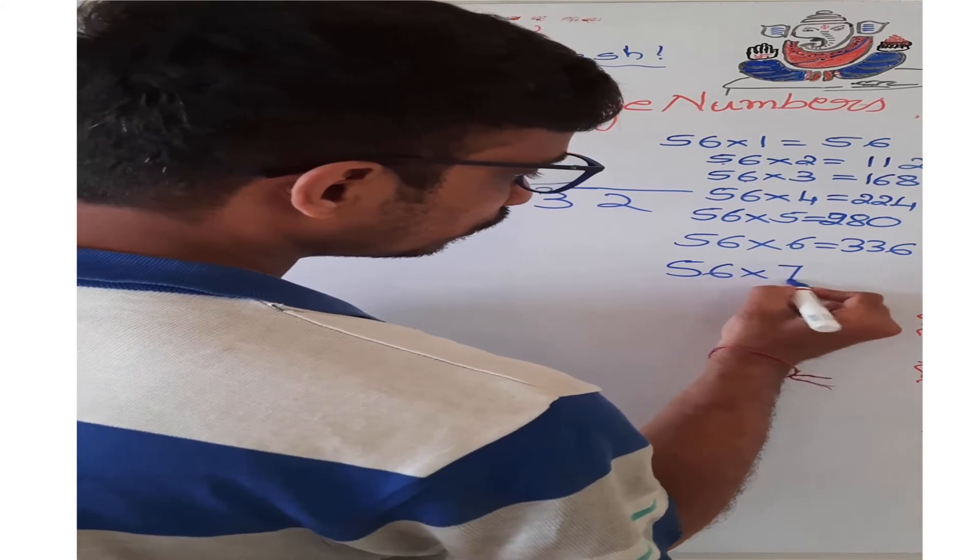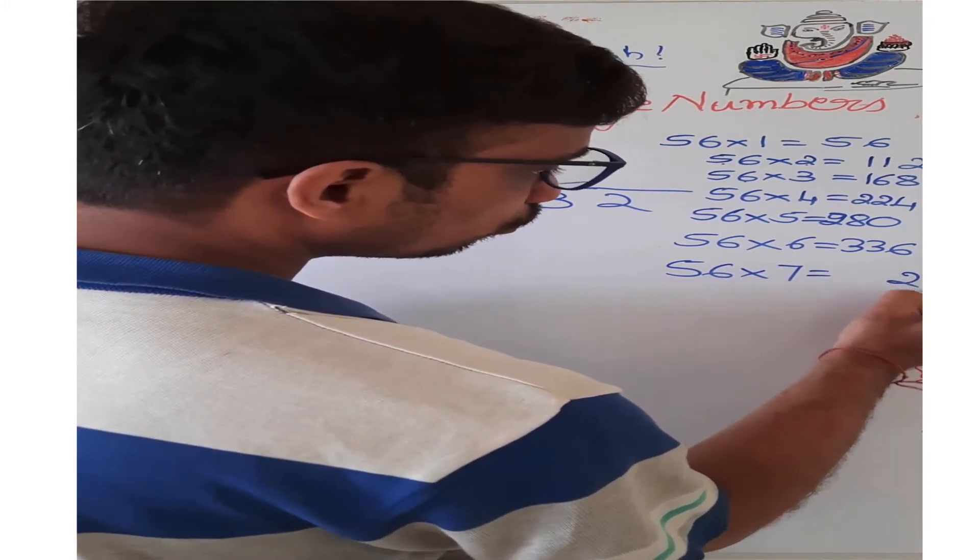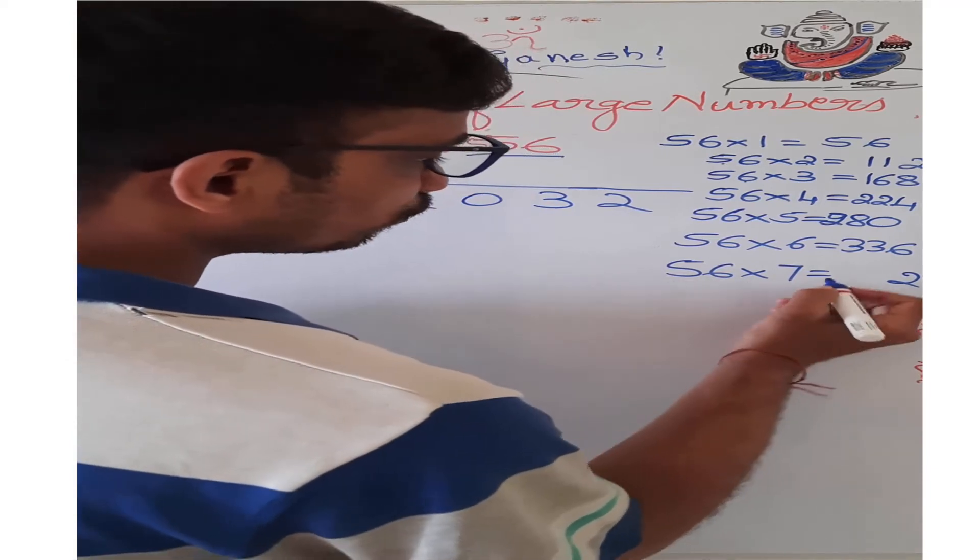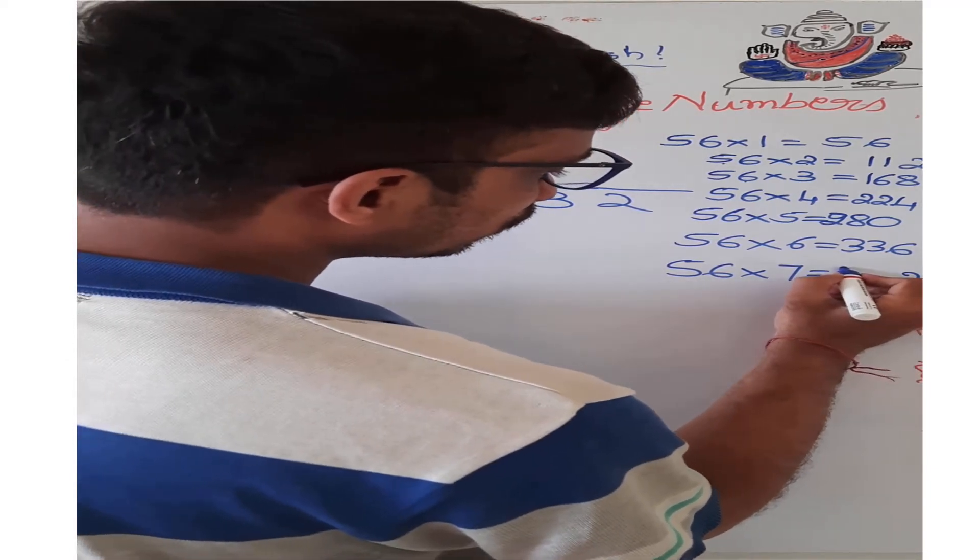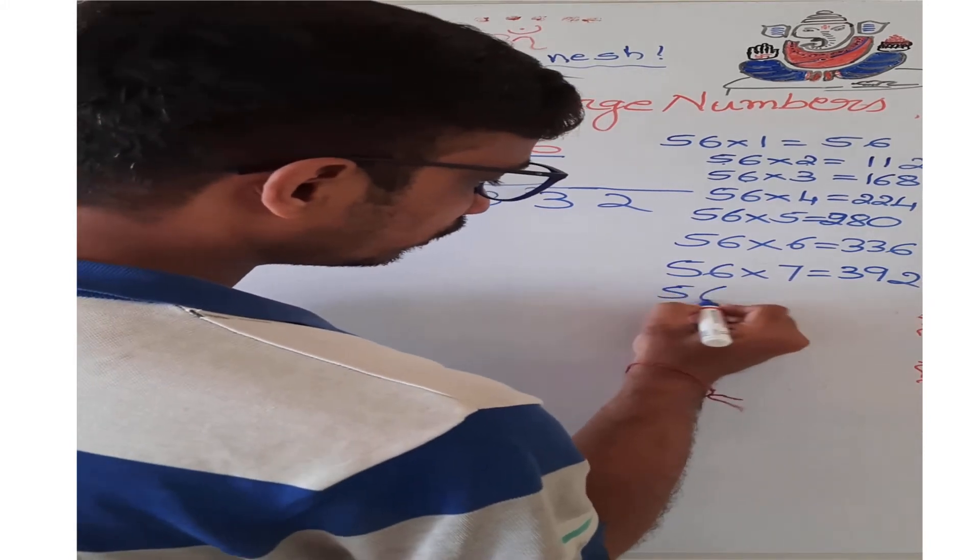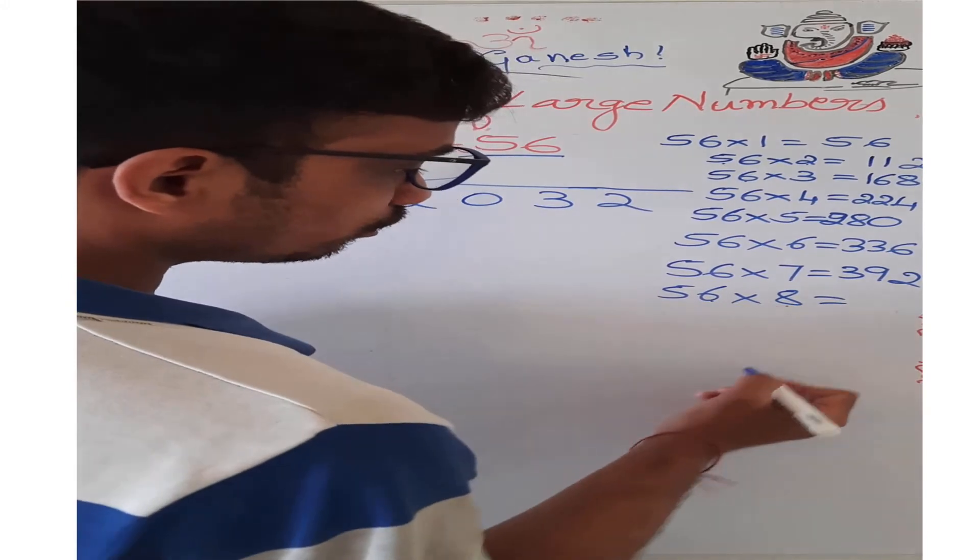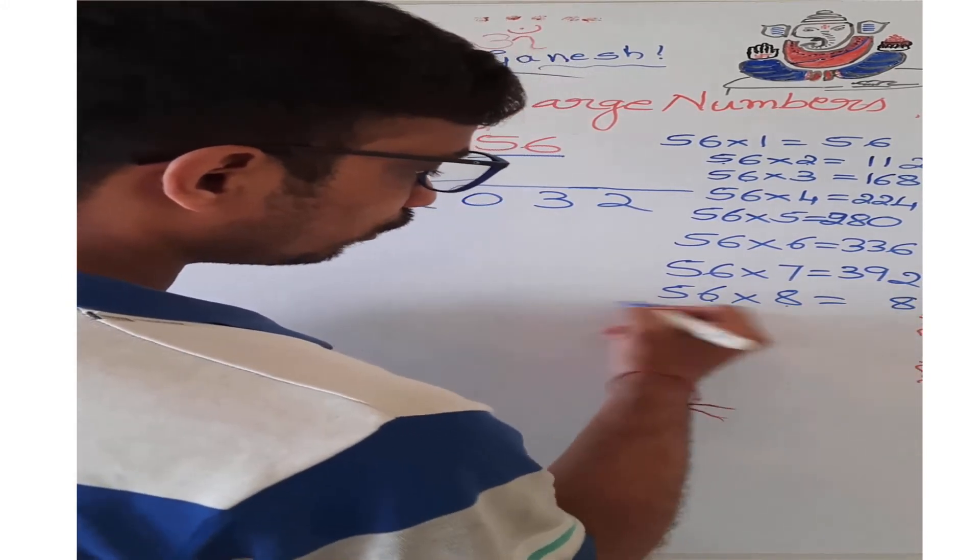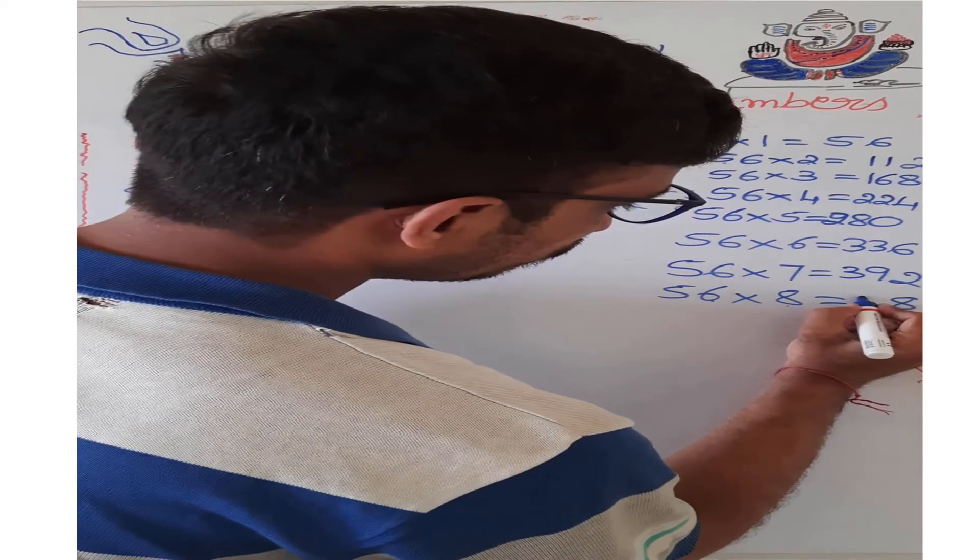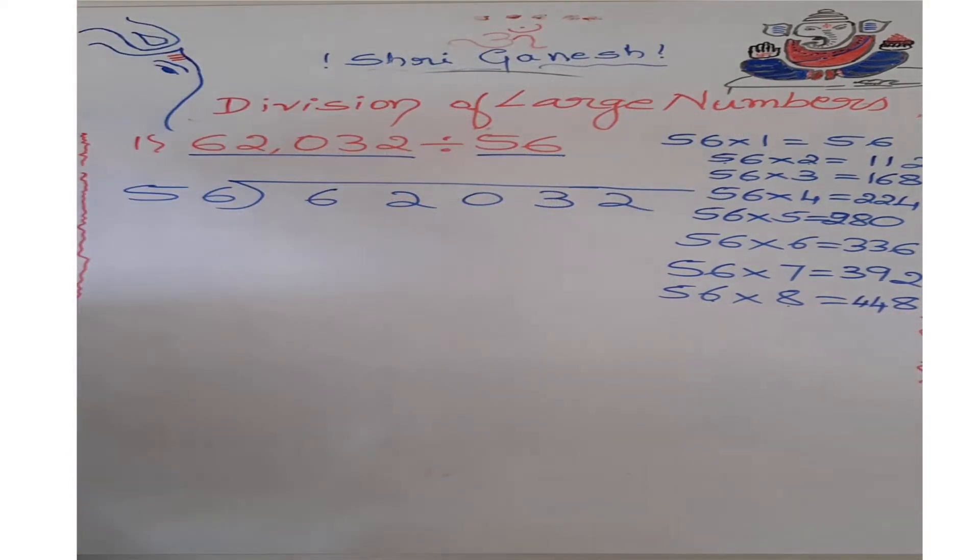56 into 7: 7 into 6 is 42, 2, 4 carry. 7 into 5 is 35, 35 plus 4 is 39. We got 392. 56 into 8: 8 into 6 is 48, 8, 4 carry. 8 into 5 is 40, 40 plus 4 is 44. We got it as 448.